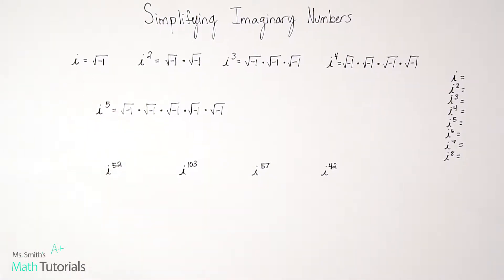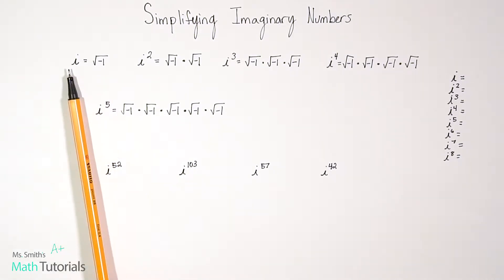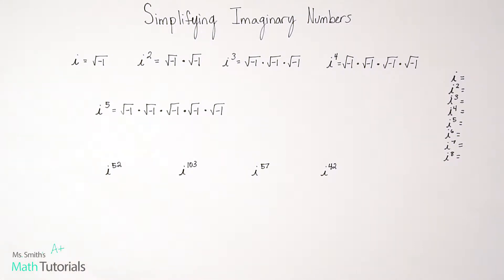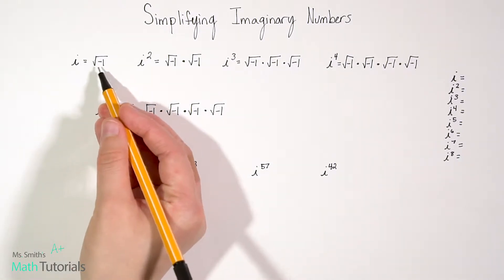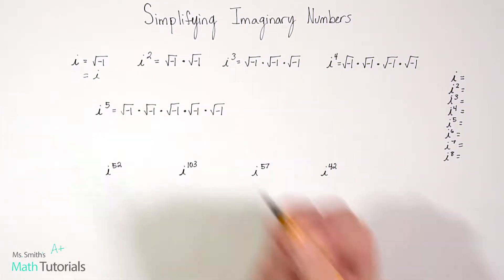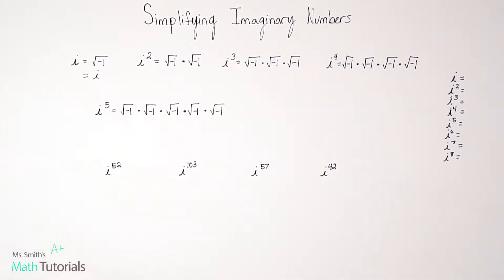We can't take the square root of a negative number and get a real answer. Instead, we get an imaginary answer, which we represent with the letter i. Whenever you see just an i to the first power — just a plain i — you know that really means the square root of negative one. i, which is equal to the square root of negative one, is really just i. That's the symbol that we use to represent it.